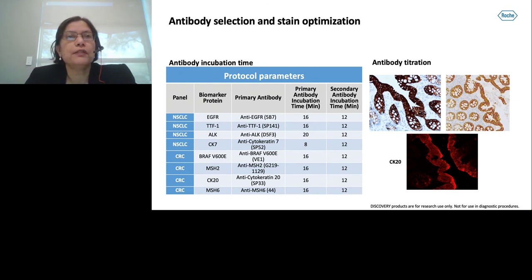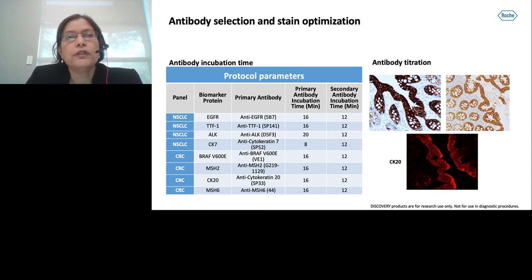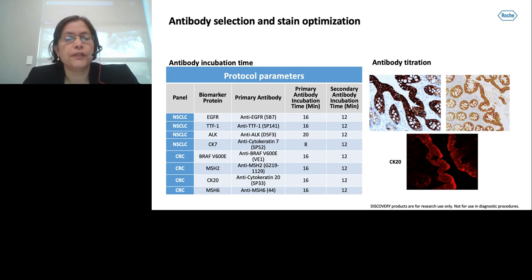For antibody selection and stain optimization, several steps must be considered for multiplex staining. We look at antibody incubation time, test antibodies already available in dispensers, and start with single-plex DAB staining to check the staining pattern. The optimum staining time can be increased or decreased—for example, ALK was increased from 16 to 20 minutes, while CK7 was decreased to 8 minutes. Another option is antibody titration: if the DAB stain is too dark, we dilute the antibody until we get optimum signal intensity, then use that dilution for fluorescent multiplexing, which is much more sensitive.